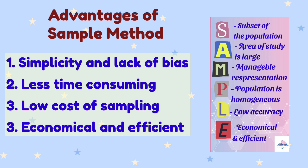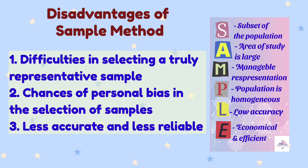Keeping in mind the acronym SAMPLE, let us list the advantages and disadvantages of the Sample method. The major advantage is its simplicity and lack of bias. It is less time-consuming and cost-effective, so it is economical and efficient. It is an alternative for studies where the Census method cannot be applied. While using the Sample method, the investigator faces difficulty in selecting a truly representative sample of the population. There are always chances of personal bias in the selection of a sample, thus making the data collected less accurate and less reliable.